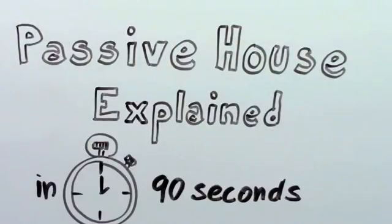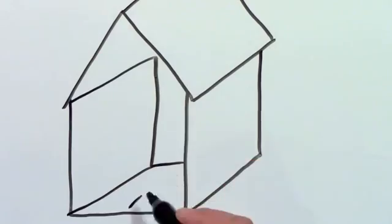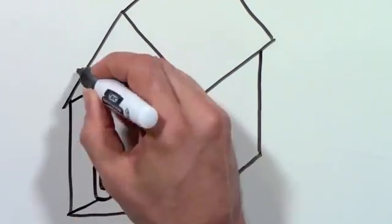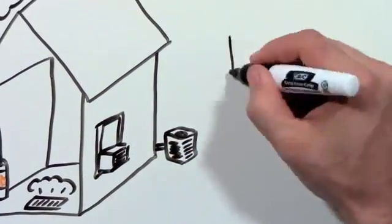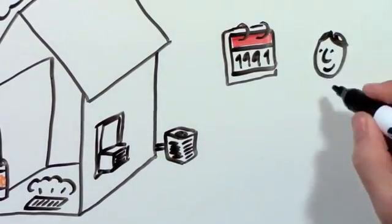Passive House explained in 90 seconds. Does your house have a heater in the basement or maybe a fireplace? Probably also a central air conditioner or maybe a window unit. Did you ever wonder if it was necessary?